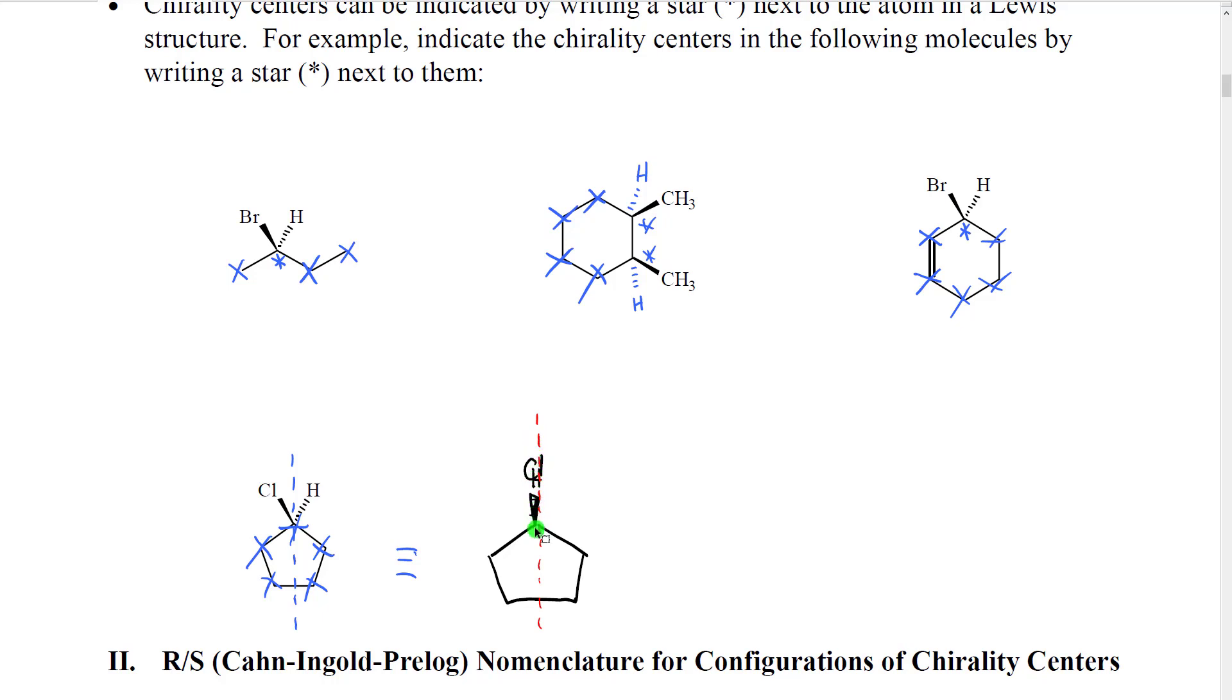You can draw a line cutting through these atoms, through that bond, through that carbon atom, and then through the ring, and you can see that the two halves of the ring are symmetric. This is a plane of mirror symmetry. So therefore, that atom is not a chirality center.